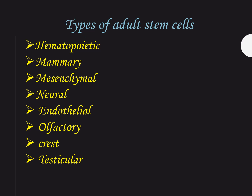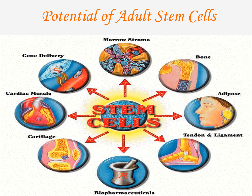The types of adult stem cells include hematopoietic, mammary, mesangial, neural, endothelial, olfactory, crest, and testicular stem cells. Their potential therapeutic applications include bone marrow transplantation, adipose tissue use in pharmaceutical industries, treatment of various cartilage disorders, cardiac tissue repair, gene delivery, and marrow stroma applications. The potential of adult stem cells is enormous.